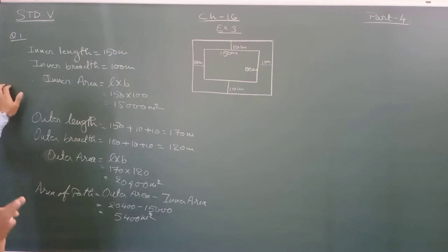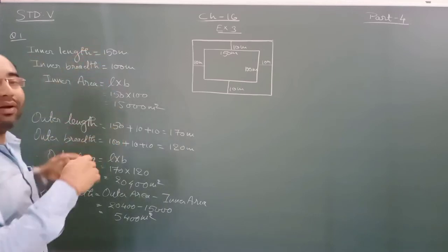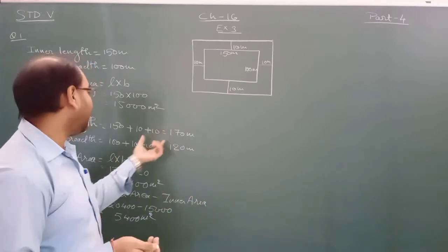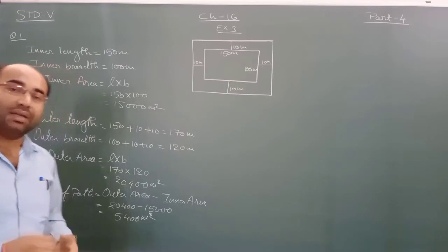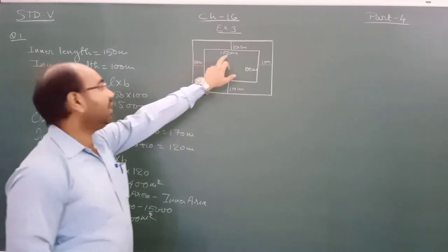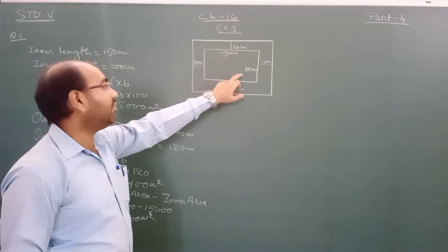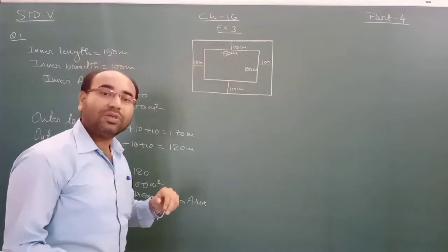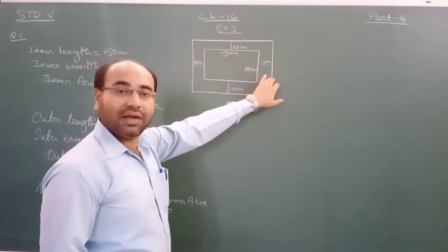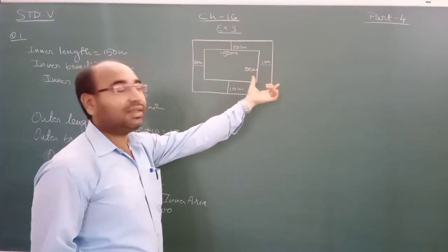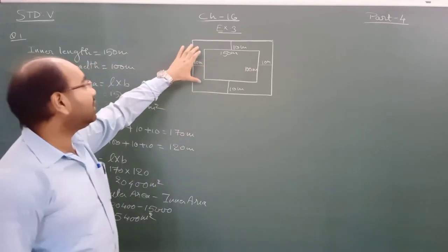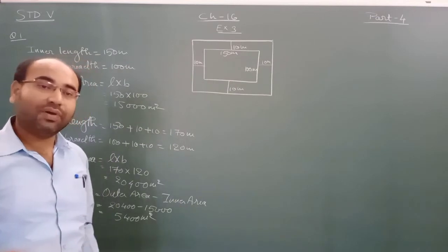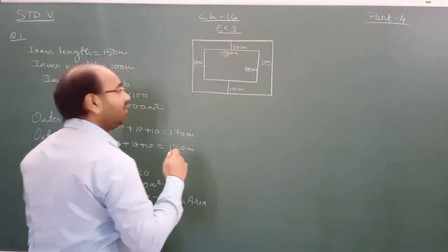So in this simple question we had a rectangular field where length is 150 m and breadth is 100 m. A path of width 10 m was made around it on all 4 sides. Another rectangle is formed on the outside. We found the inner area and outer area, and the area of the path is outer minus inner.